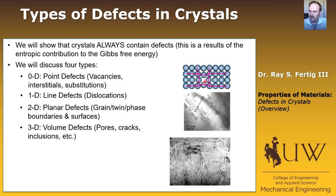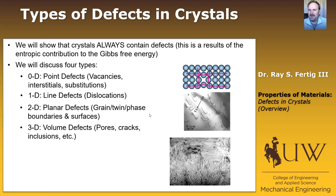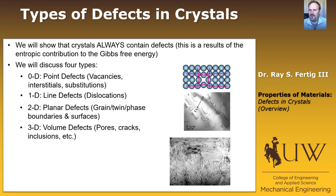An example of a point defect is where an atom has been removed from the lattice — that's a vacancy. We'll also talk about 1D defects, which are line defects called dislocations. Here's a transmission electron microscope image where you can actually see dislocations in a material. Then we'll move on to planar defects: grain boundaries, twin boundaries, phase boundaries, and surfaces. You can see grain boundaries here, and within a grain there's striping — those are phase boundaries within the grain.